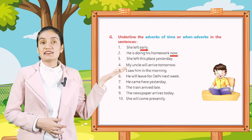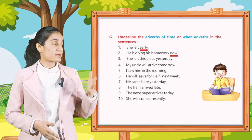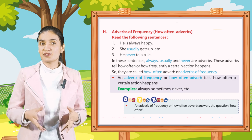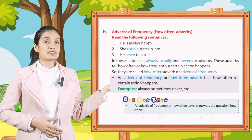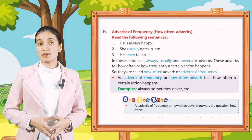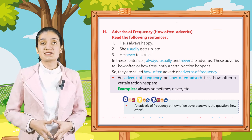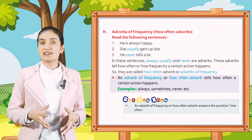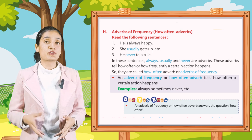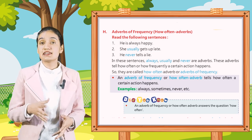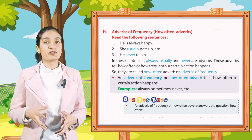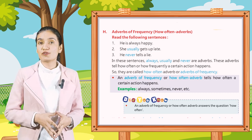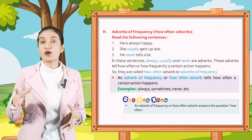Part H: Adverbs of Frequency — how often adverbs. Read the following sentences. First: He is always happy. Second: She usually gets a prize. Third: He never tells a lie. In these sentences, 'always', 'usually', and 'never' are adverbs. These adverbs tell us how often or how frequently a certain action happens, so they are called how often adverbs or adverbs of frequency.